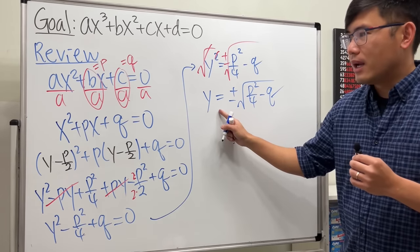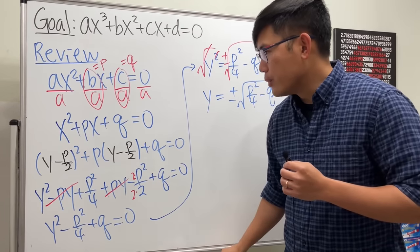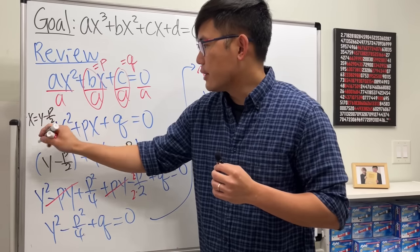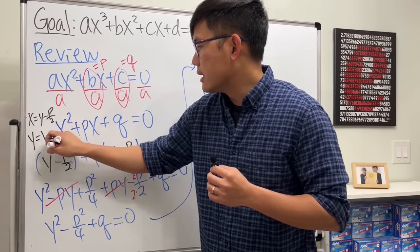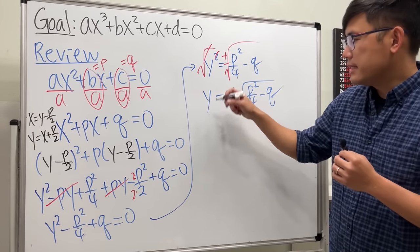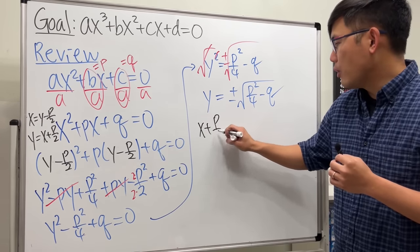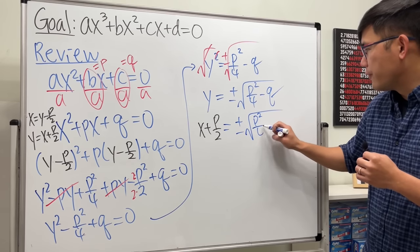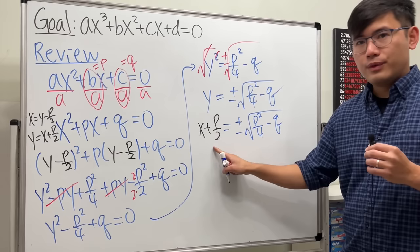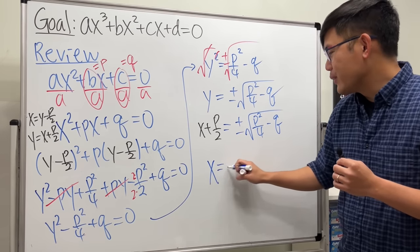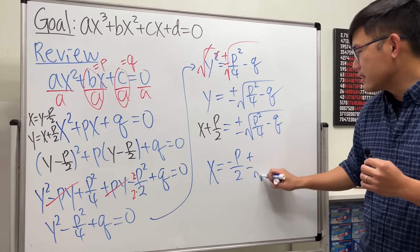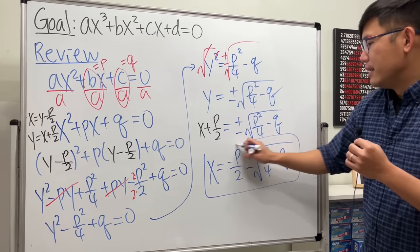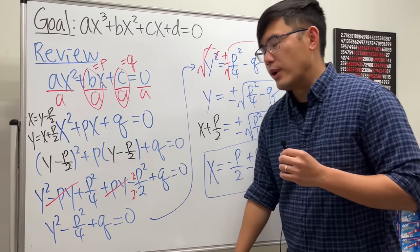So y = ±√(p²/4 - q). Now what was y? We said x = y - p/2, meaning y = x + p/2. Replacing y with x + p/2: x + p/2 = ±√(p²/4 - q), so x = -p/2 ± √(p²/4 - q). This is the so-called pq formula for the quadratic equation.